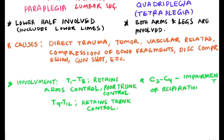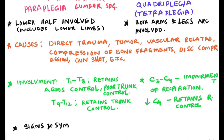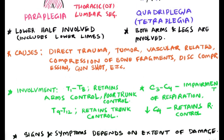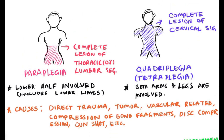If the lesion occurs at the C3–C4 level, it leads to impairment of respiratory ventilation, because the phrenic nerve emerges from the C3–C4 level and supplies the diaphragm. Whereas if the lesion occurs below C4, the respiratory system may be spared. The signs and symptoms of spinal cord transection purely depend on the extent of the damage to the spinal cord.